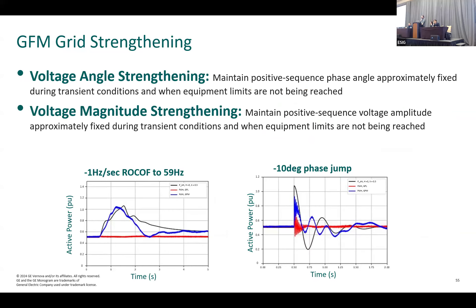We are looking into simulation results comparing three different subsystems. In black is a synchronous machine modeled by a swing equation. In blue is our grid-forming wind model. In red is a state-of-the-art grid-following wind model. We are using these simulations to test what we call our grid-strengthening metrics, developed as part of a demonstration project on the West Coast — metrics defining what a grid-forming resource should be doing.